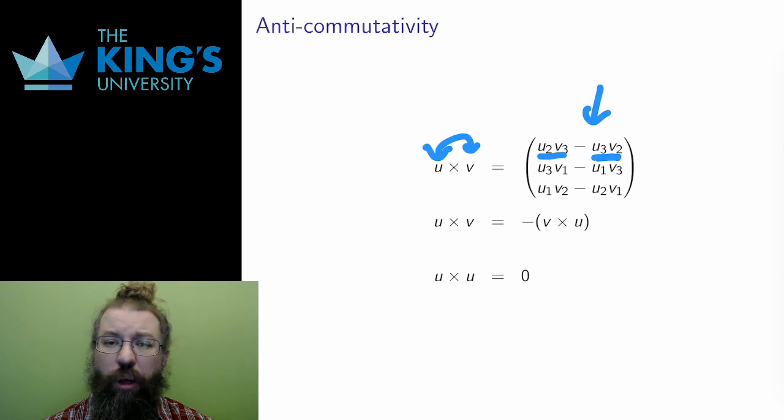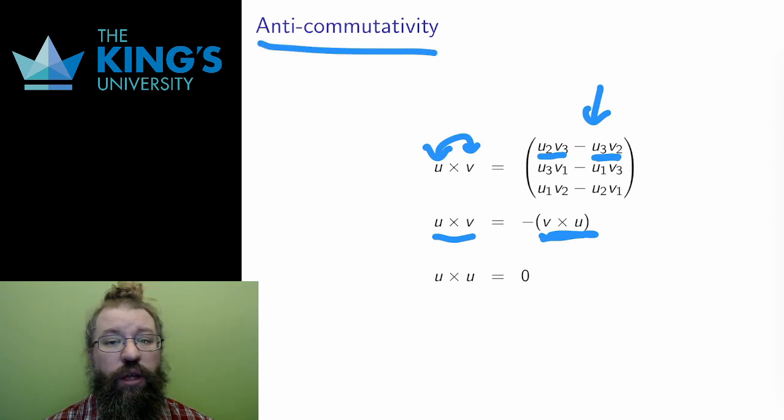This is the first multiplication where order matters. If I interchange the order of the cross product, the sign changes. A product that has this property is called anti-commutative. The cross product is an anti-commutative operation.